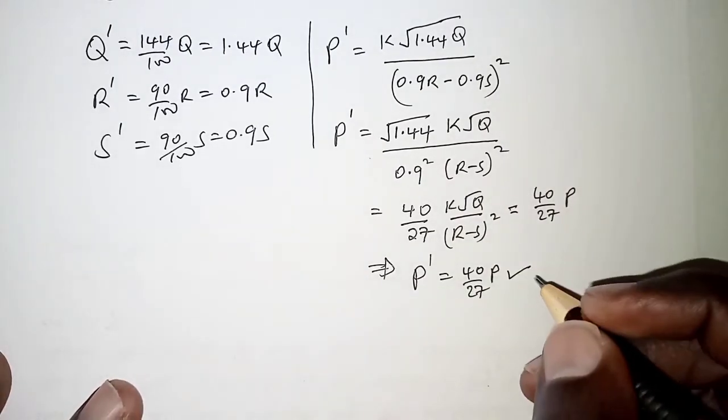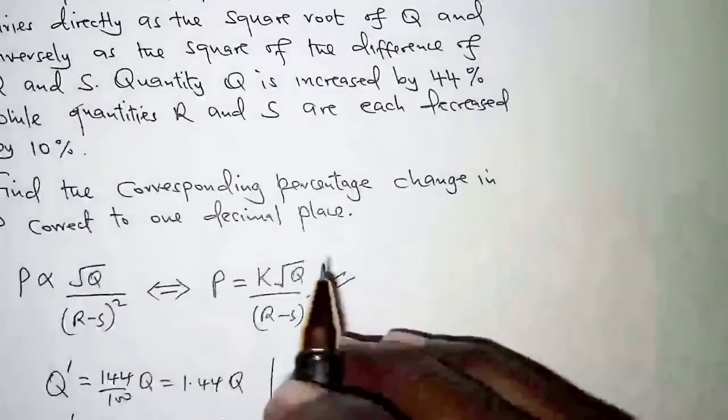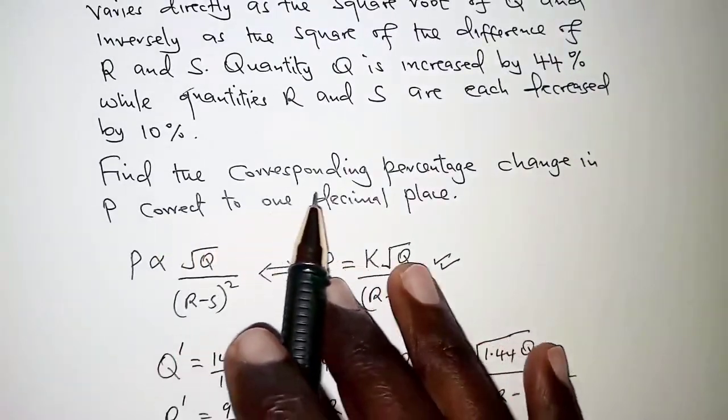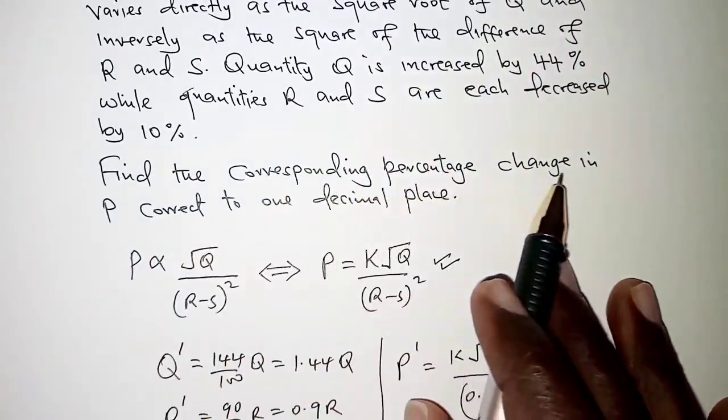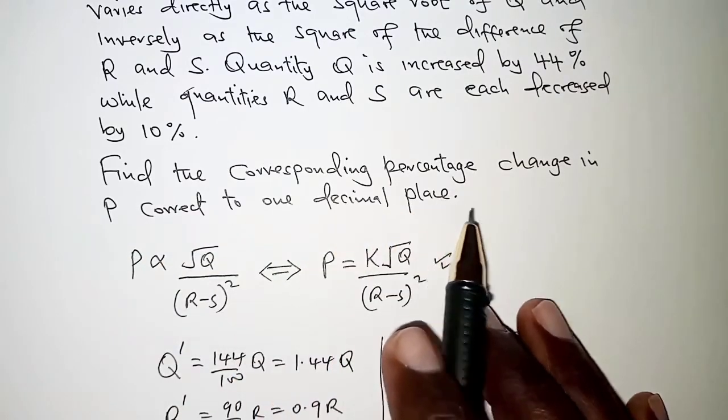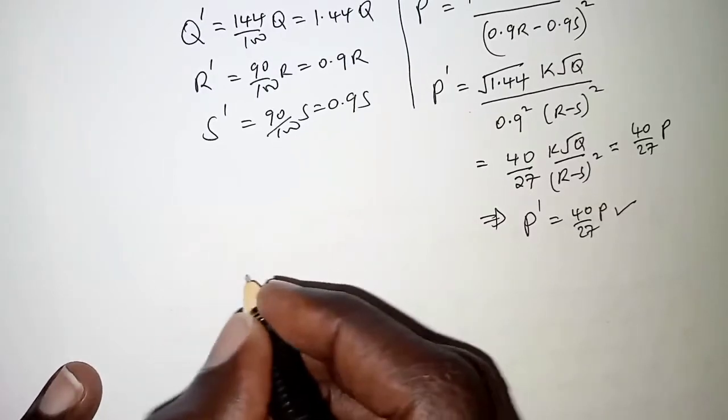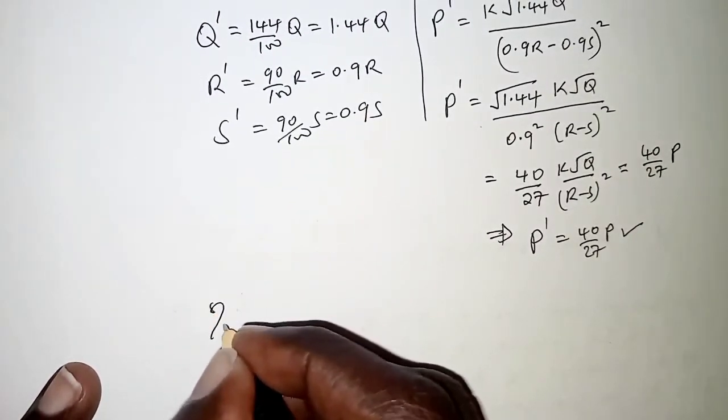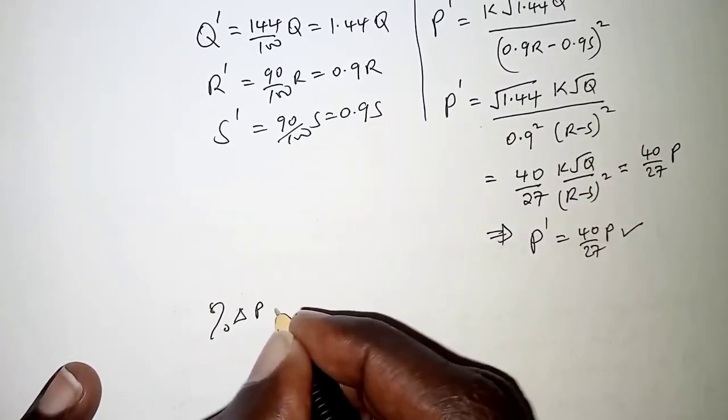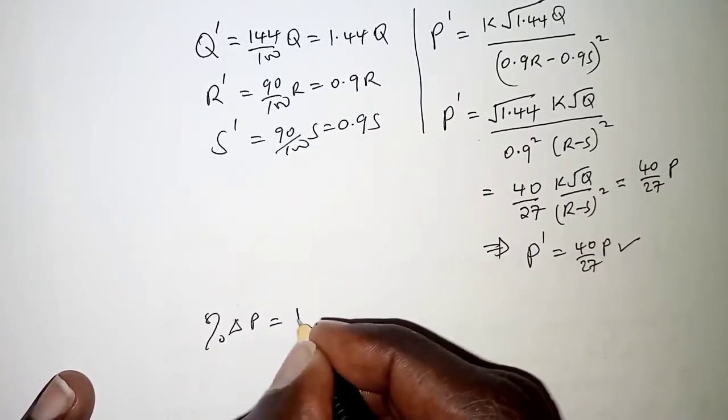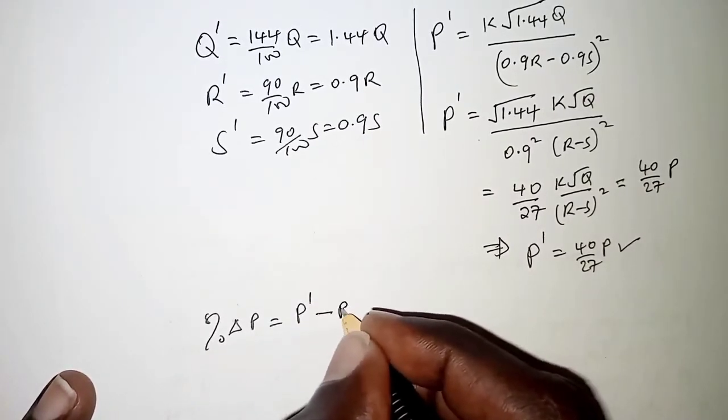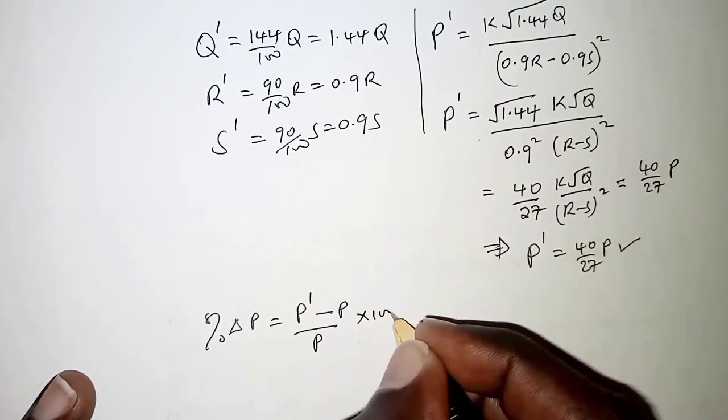So with this, we can therefore get the corresponding percentage change in P correct to one decimal place. The percentage change in P will be obtained by simply having the new value of P minus original P over the original P times 100.